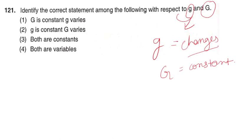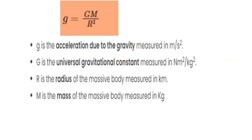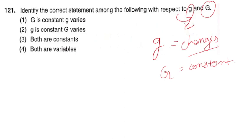The formula: acceleration due to gravity (g) equals capital G (universal gravitational constant) into M (mass of the massive body) divided by R squared (radius of the massive body). Capital G is a universal constant — always constant. Small g, acceleration due to gravity, always varies.